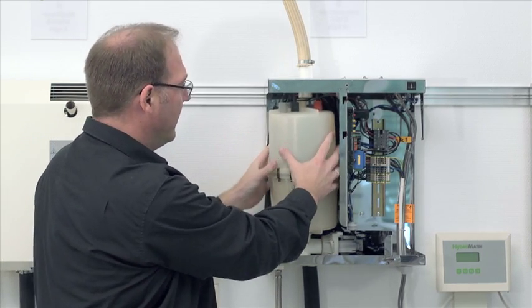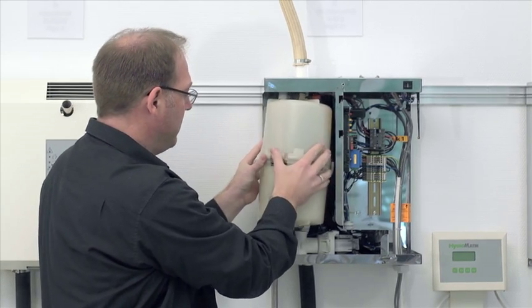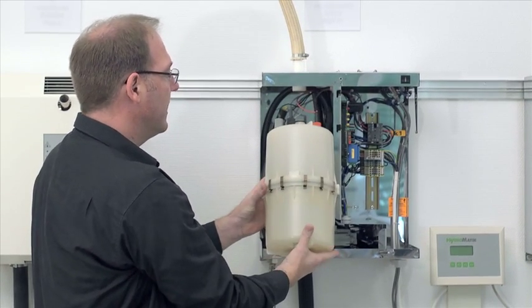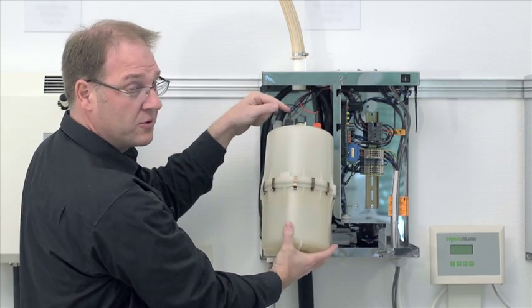In the next step, I can now lift the steam cylinder out of the base, keep it in my hands, and can disconnect the electrodes on top here.